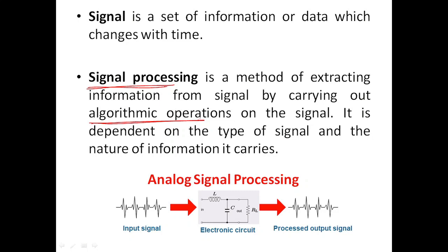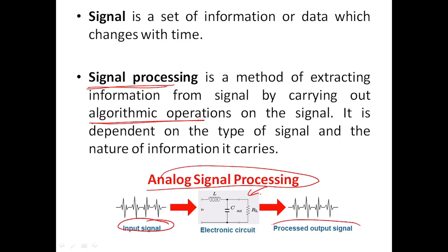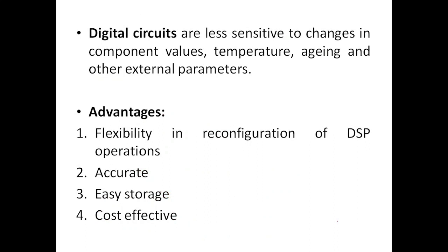Signal processing can be of two types: analog signal processing or digital signal processing. In analog signal processing, you use electronic circuits made up of RLC components and filters. This kind of processing using RLC circuits is regarded as analog signal processing.